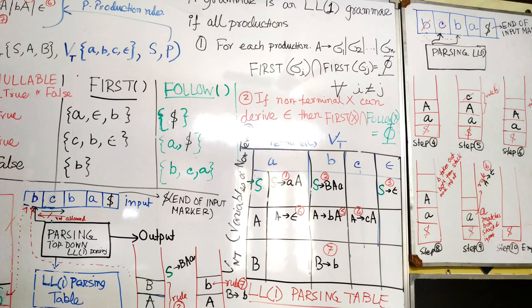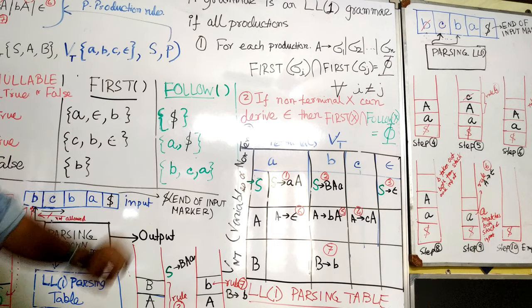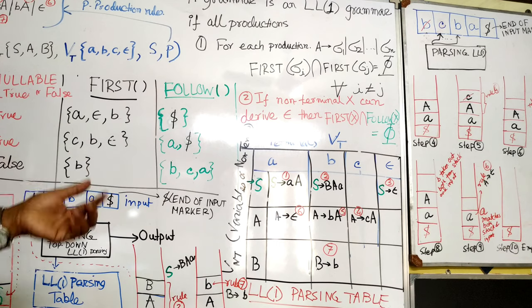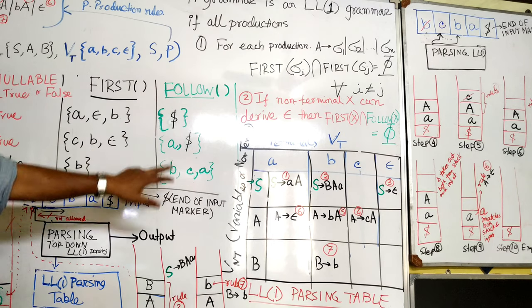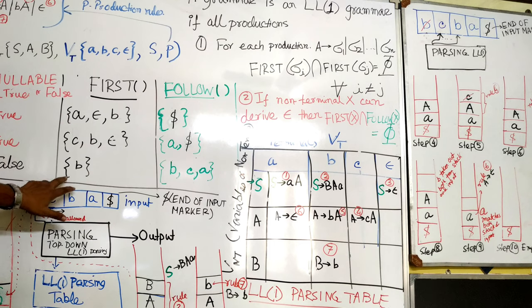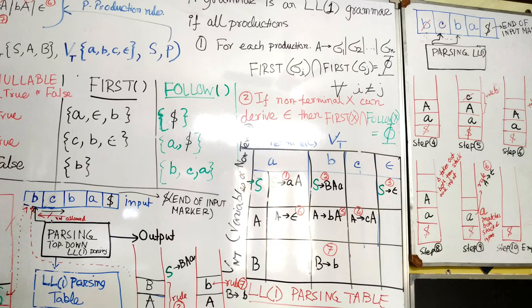Follow of B, first of A is there. And A can go to epsilon by rule number 2, so a comes in follow of B. This is the first and follow. We already checked that if any variable goes to null, the first and follow should be disjoint. You see there is no common terminal: c, b, epsilon, a, so there is no intersection. We should not check it for capital B because it is not nullable. For capital S it is nullable, there is no common element.